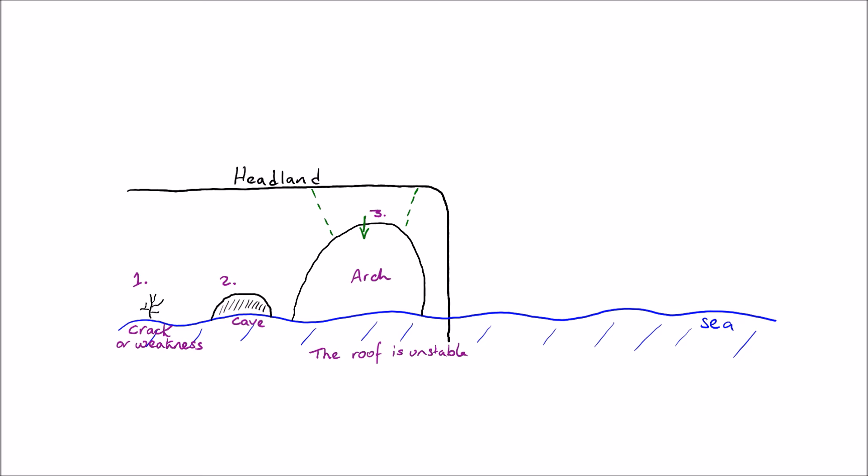The roof of the arch is however very unstable, especially the larger that the arch becomes. And eventually due to weathering and erosion, especially after heavy rainfall, it's very possible for the roof of this arch to collapse into the sea.